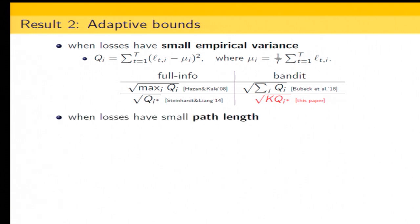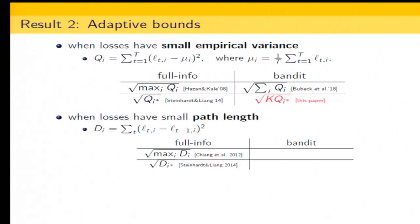The second way to characterize the slowly changing property is by the path length, defined as the sum of squares of the differences of the losses. This is well understood in the full information setting — regret can depend on either the maximum path length over all arms or the path length of the best arm. There were no results about path length bounds for bandits. Due to technical difficulties, we only have a first-order path length, meaning there is no square in the definition of the path length, but we can still get some regret bounds.